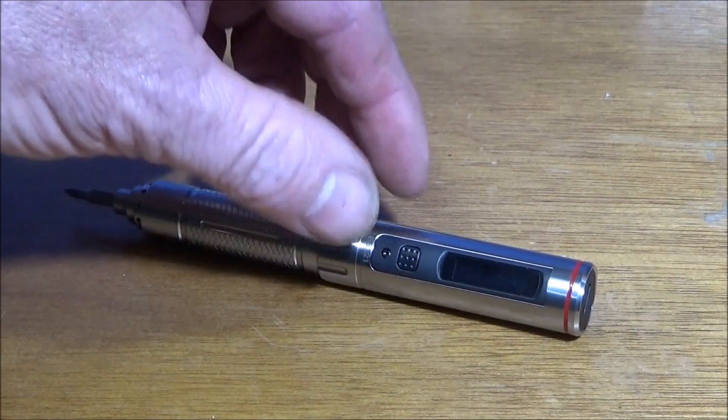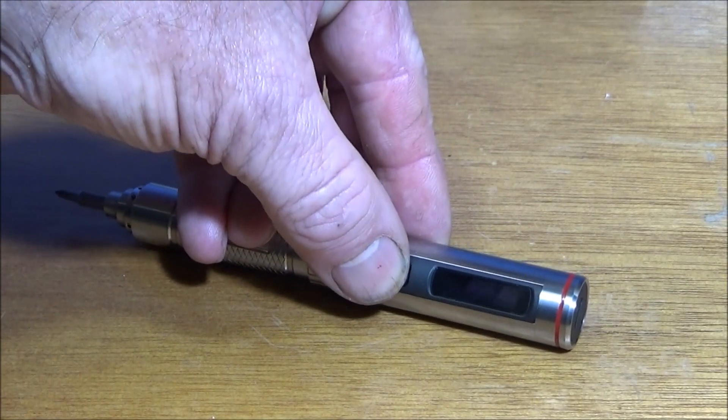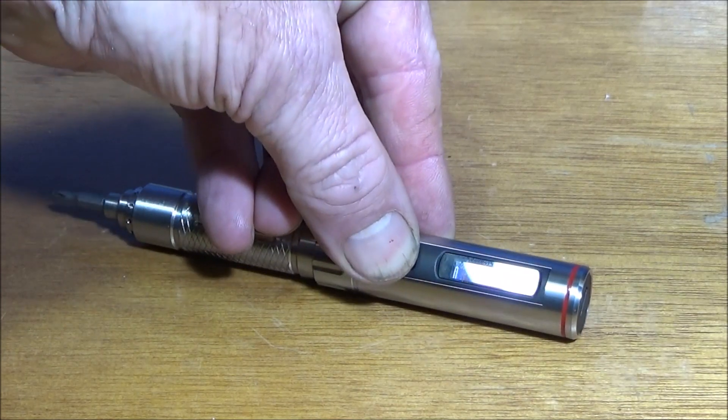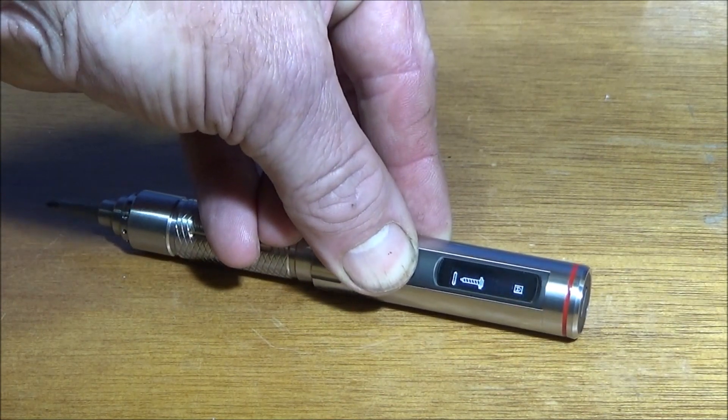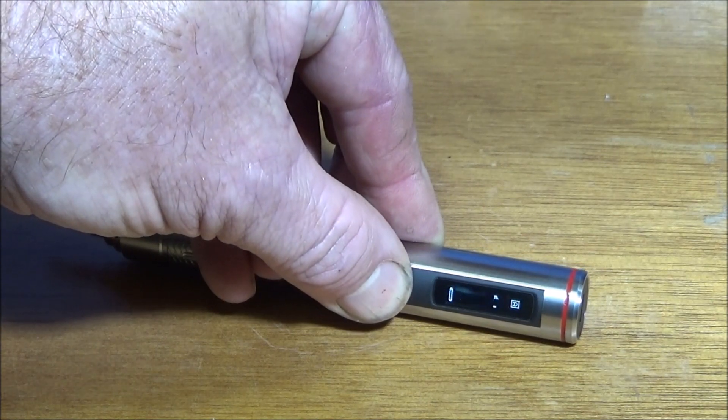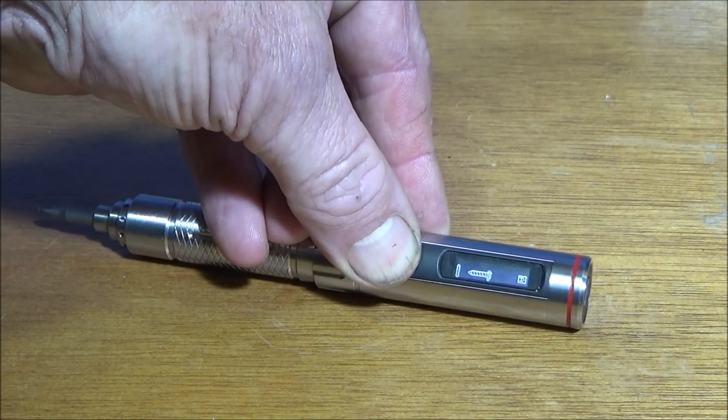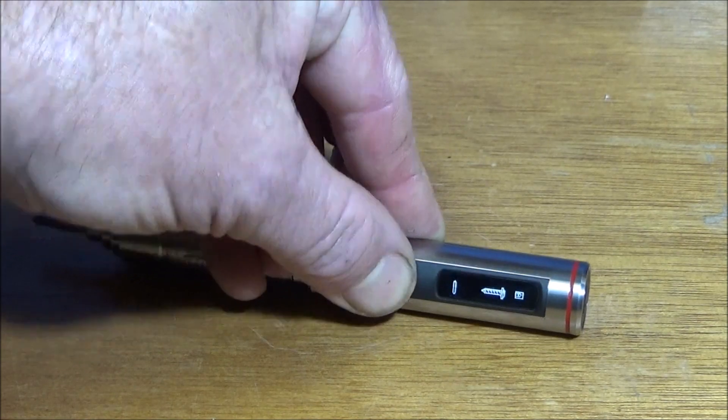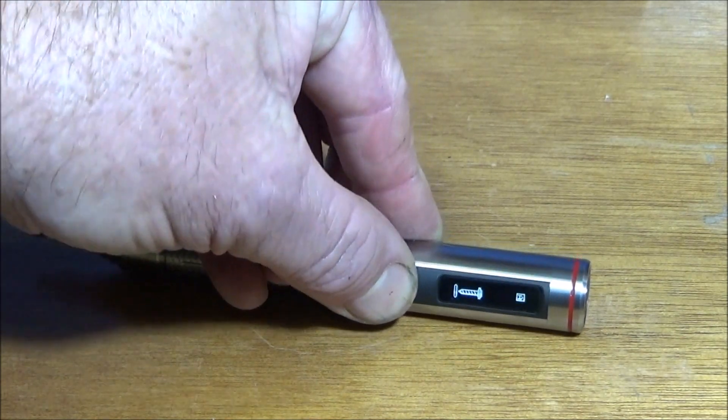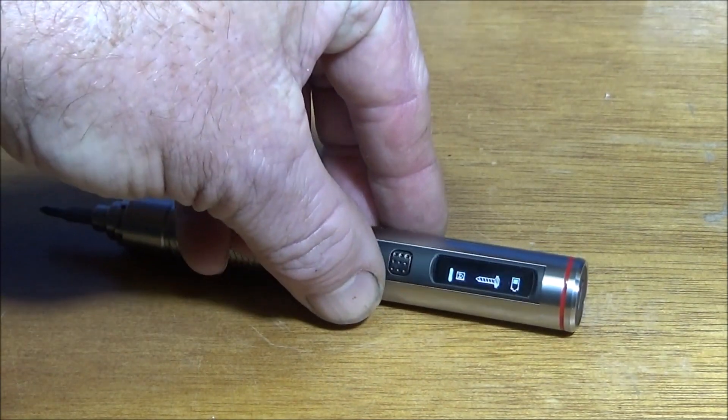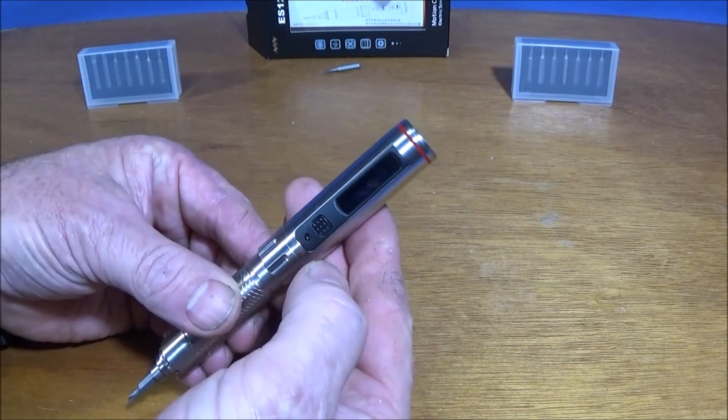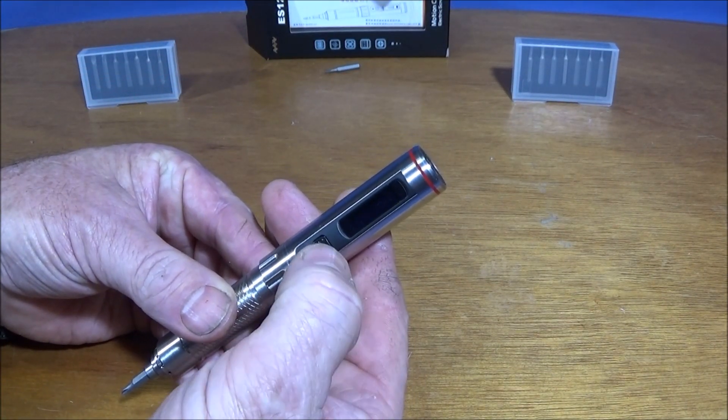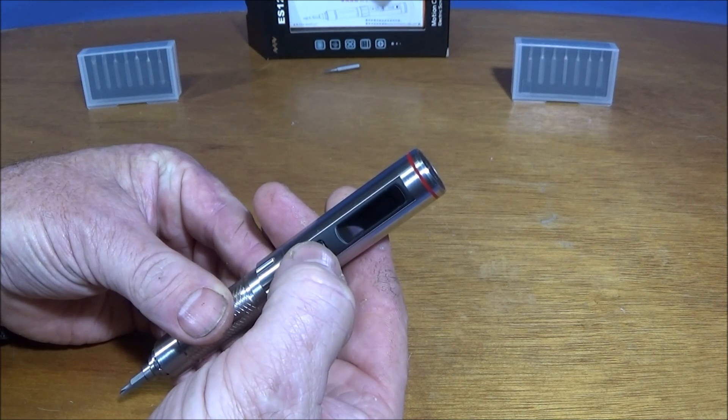The display shows what program I've got it in, there's a small A on the screen there at the moment. It's very straightforward to get into the program mode - it's three presses on the actual button here, three quick presses.